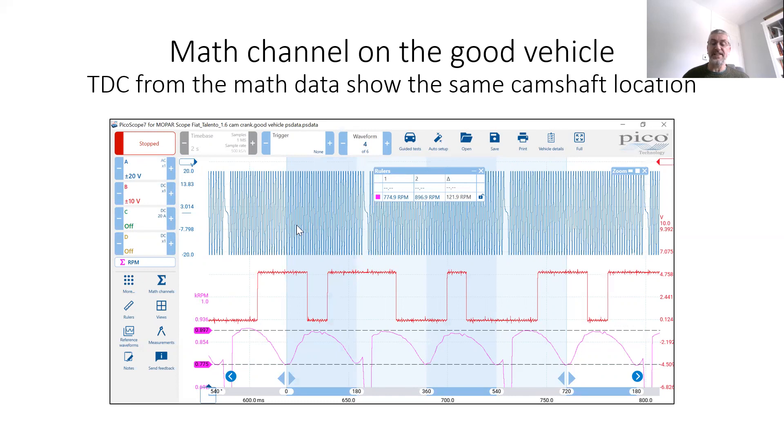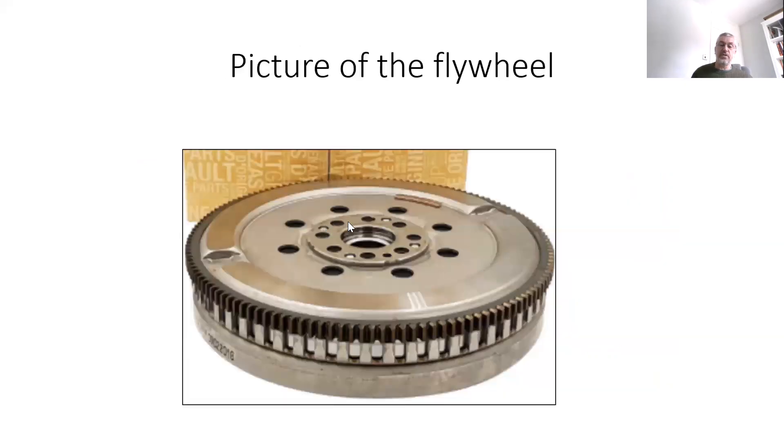So this confirms that it's actually the sensor on the flywheel that is out. And so moving on to showing the flywheel, you can see this is where the pickup is for the TDC sensor. And what actually happened, you've got a location pin here, and when you refit the flywheel, you have to line that up. And what had happened, this hadn't been lined up and it was one tooth round, which is actually 45 degrees.